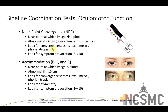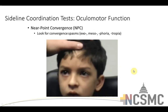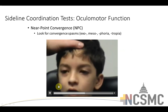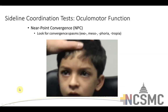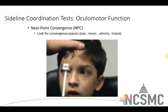Near point accommodation is very similar, but instead of asking when the image goes double, you ask when it goes blurry. Take something with crisp print on it, have the athlete confirm it's sharp from a distance, then slowly bring it toward their nose. When it gets blurry, they tell you and you measure the distance. Abnormal is less than 15 centimeters. Look for any divergent gaze, asymmetry, or symptom provocation. An example shows a young boy whose right eye has an exophoric spasm as the object approaches his near field.